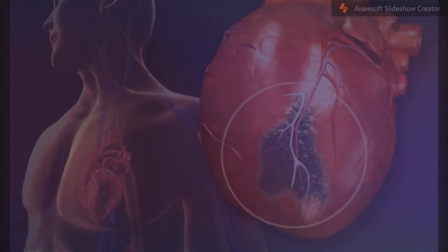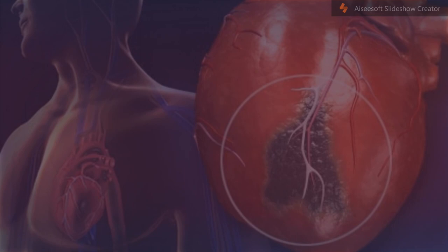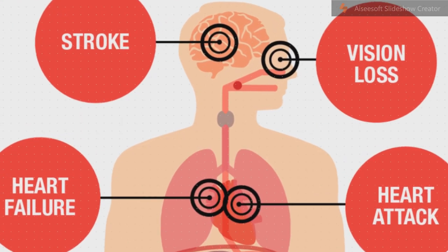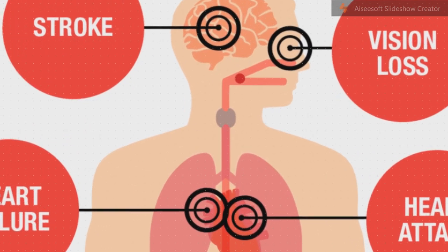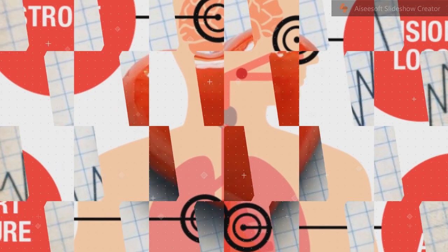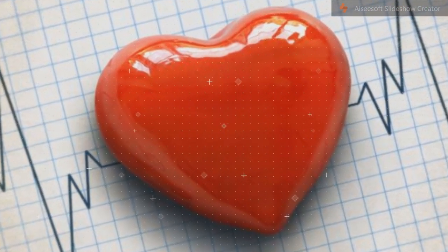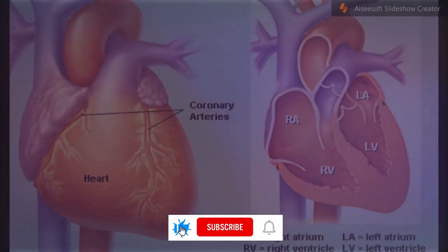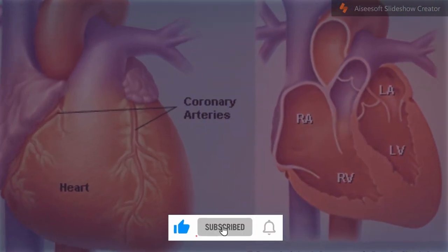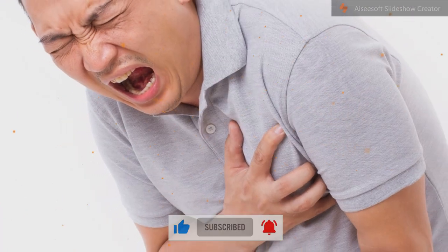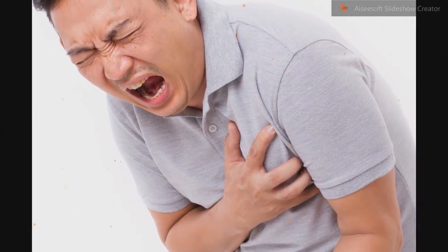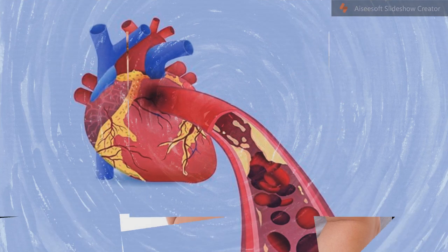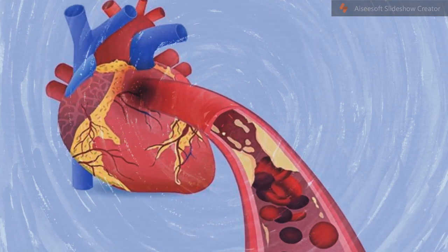Diagnosis: A myocardial infarction has occurred with blockage of a branch of the left coronary artery. An acute myocardial infarction, according to current consensus, is defined by elevated cardiac biomarkers with a rising or falling trend and at least one of the following criteria.